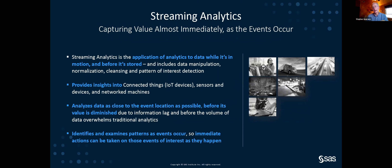Where all of this comes together with streaming data — data constantly in motion from sensors, airplanes, machines, turbines, or people on websites — is the term streaming analytics. Streaming analytics takes AI, machine learning, and deep learning and applies it to data while it's in motion. Rather than bringing all data back somewhere, storing it, and then applying analytics, we apply machine learning and AI on those streams of data as they arrive. We can also push analytics out to the edge, closer to where the event originates, so we can make decisions faster.